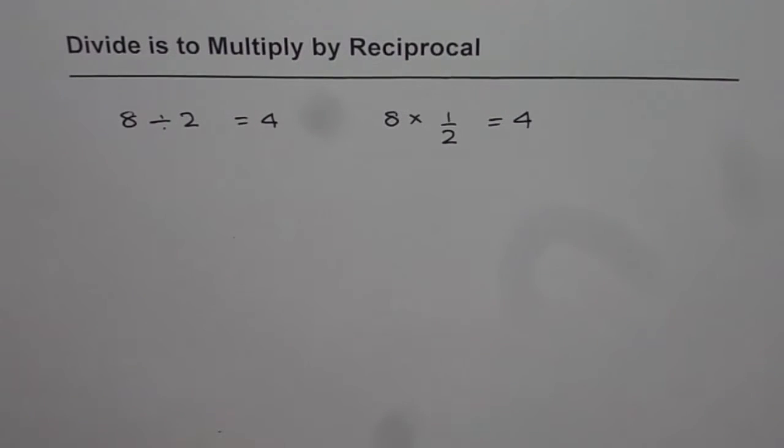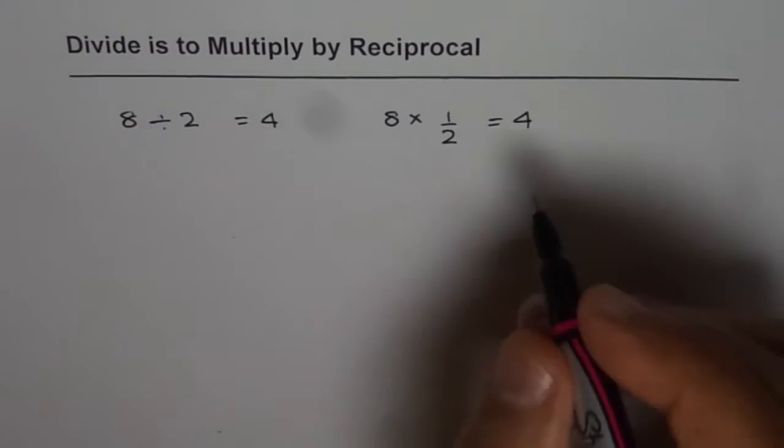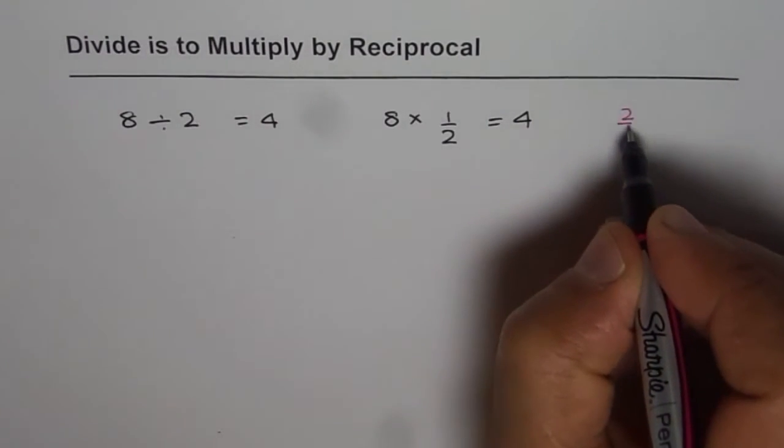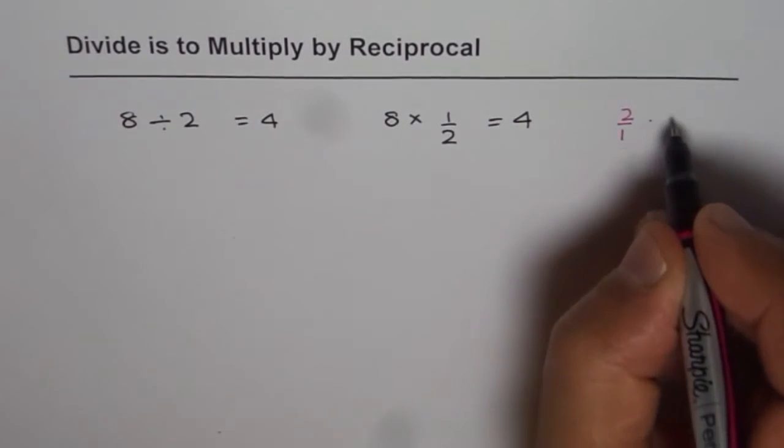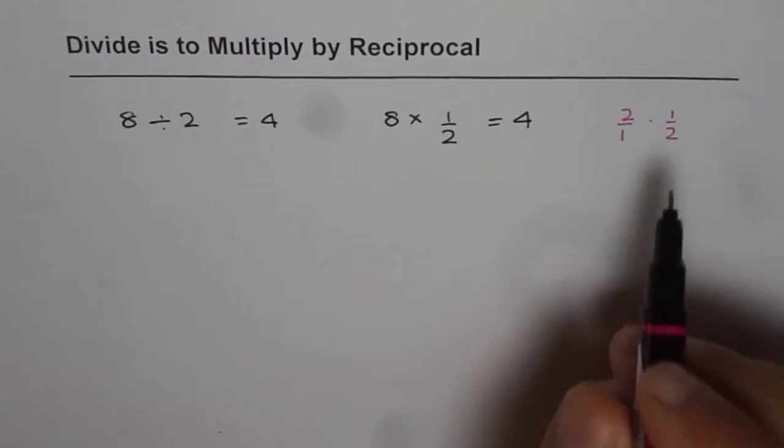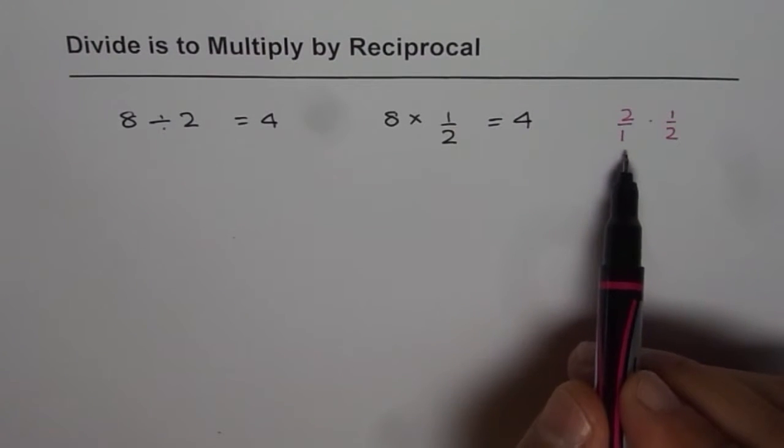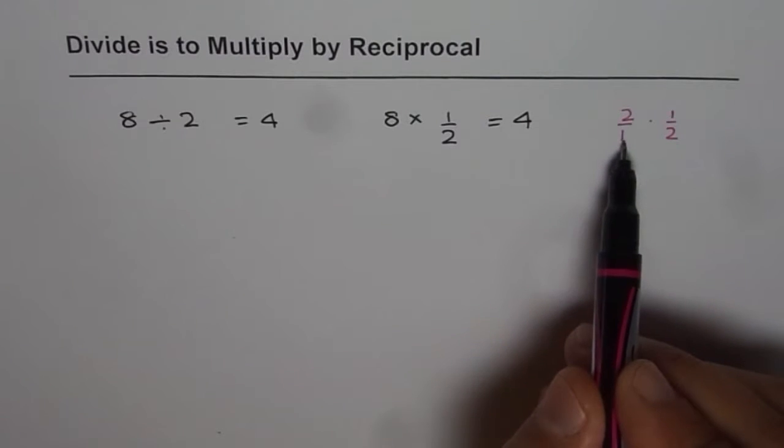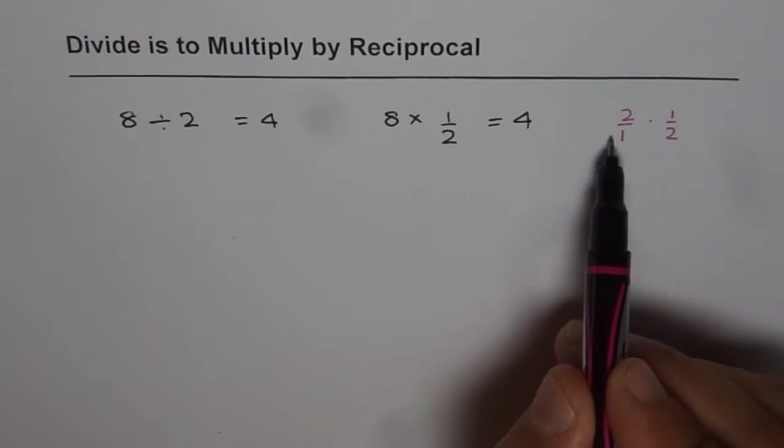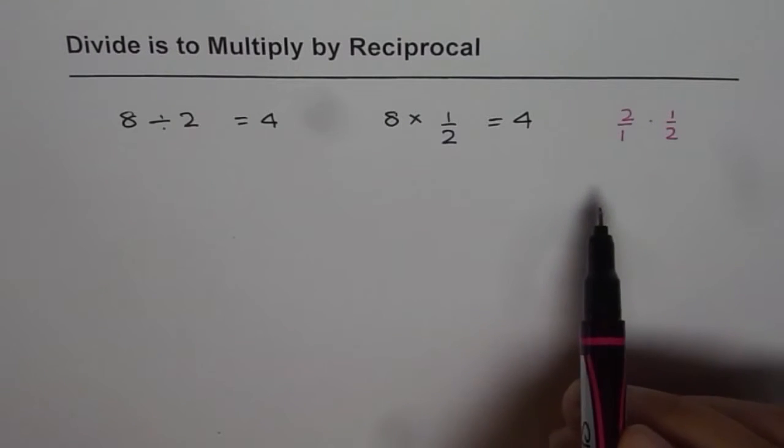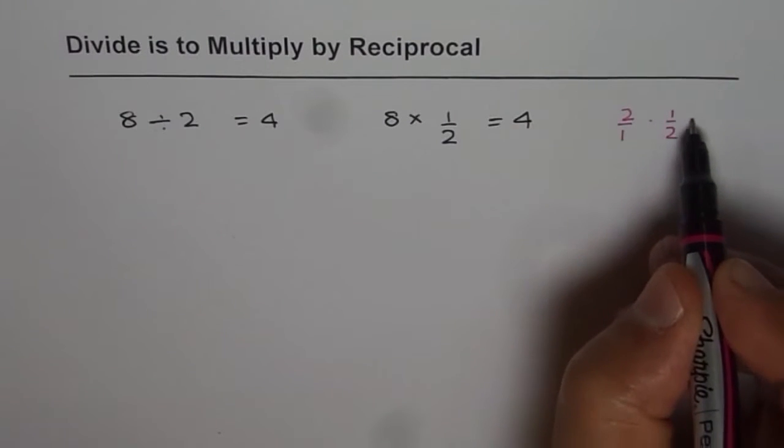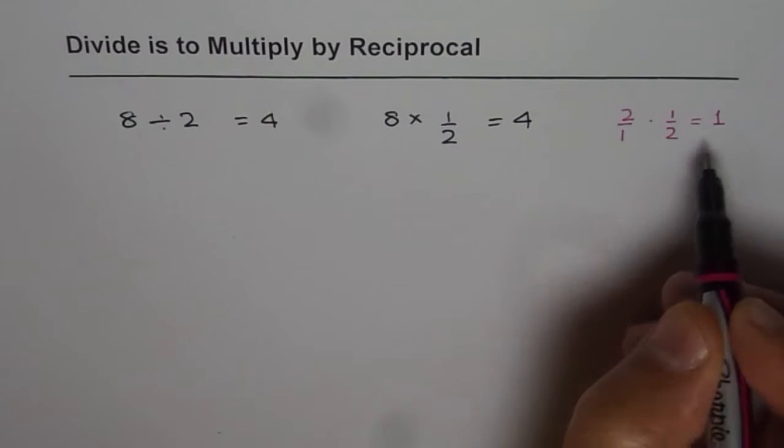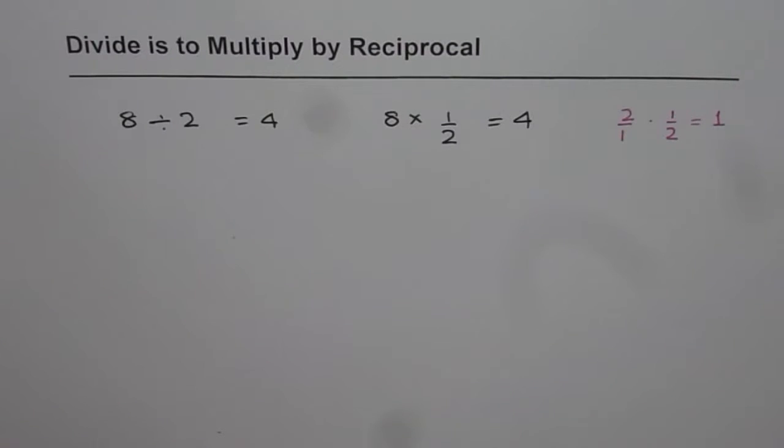2 could be written as 2 over 1. 2 is 2 over 1 and half is 1 over 2. So when you write the numbers flipped so that numerator becomes denominator and denominator becomes numerator, we get reciprocal of a number. And remember, multiplying reciprocals always gives you 1. So these are few things which we need to know in moving forward with this video.